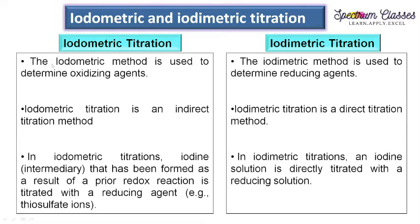The first point I have summarized here: the iodometric method is used to determine an oxidizing agent. You can easily memorize this — iodometric is related to the oxidizing agent. Whereas iodimetric titration is just the opposite, so iodimetric is for the reducing agent.